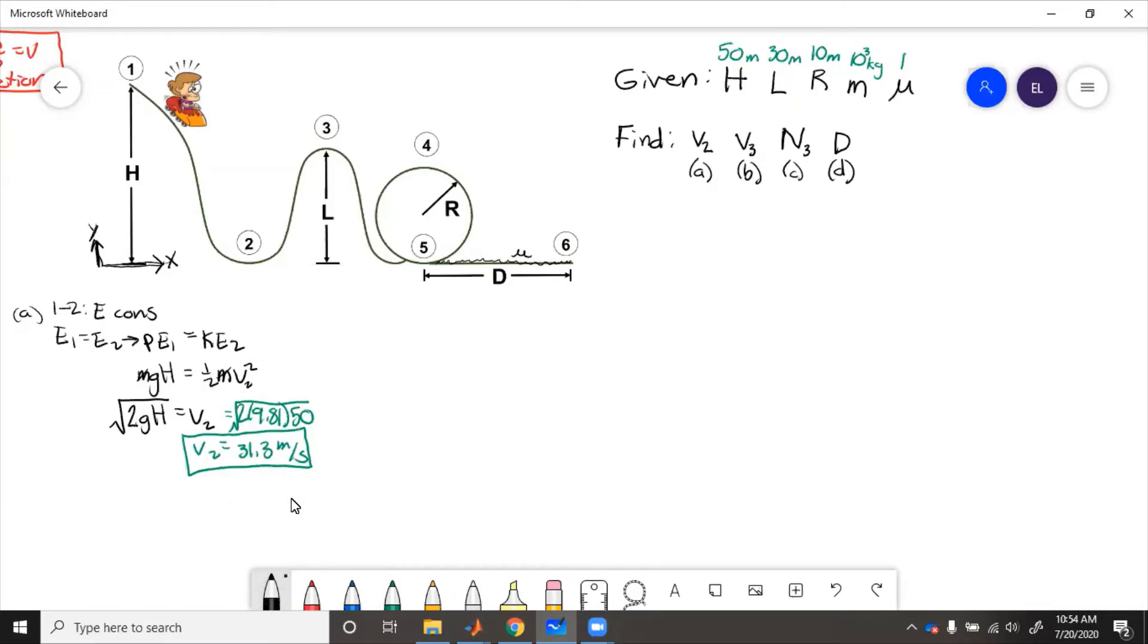Now for part b, we need to find velocity at three. This one is a little bit more challenging because at state three, there is kinetic energy and potential energy, both. At state one, there's just potential.